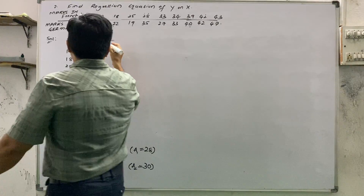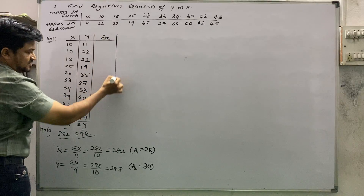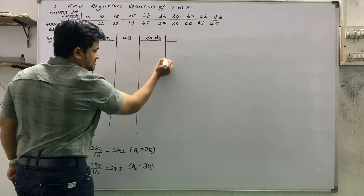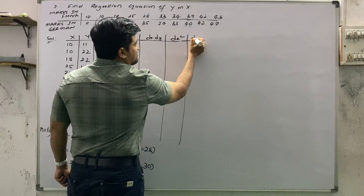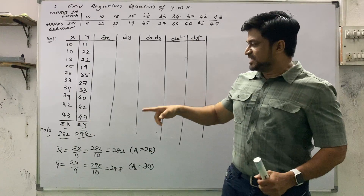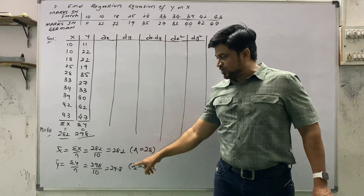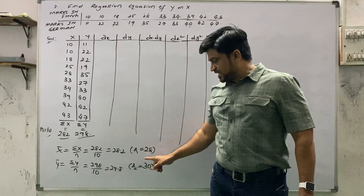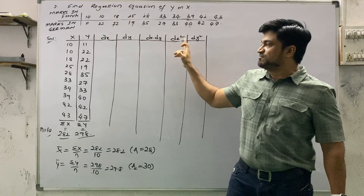When means have decimals we do not use small x; instead we use dx, dy, dx·dy, dx², and dy² as our columns. To summarize: when mean is actual (no decimals) use columns x, y, x·y, x², y²; when mean is assumed (decimals present) take A1 and A2 as assumed means and use columns dx, dy, dx·dy, dx², dy².